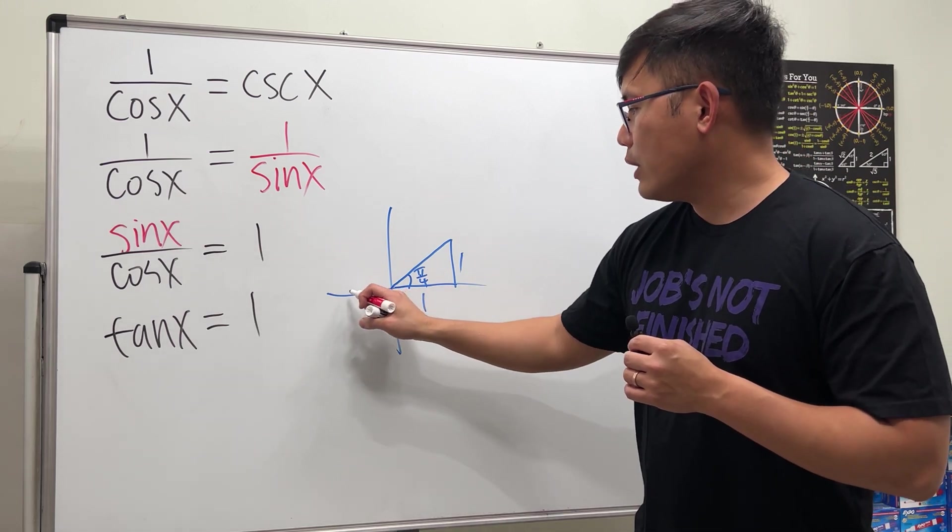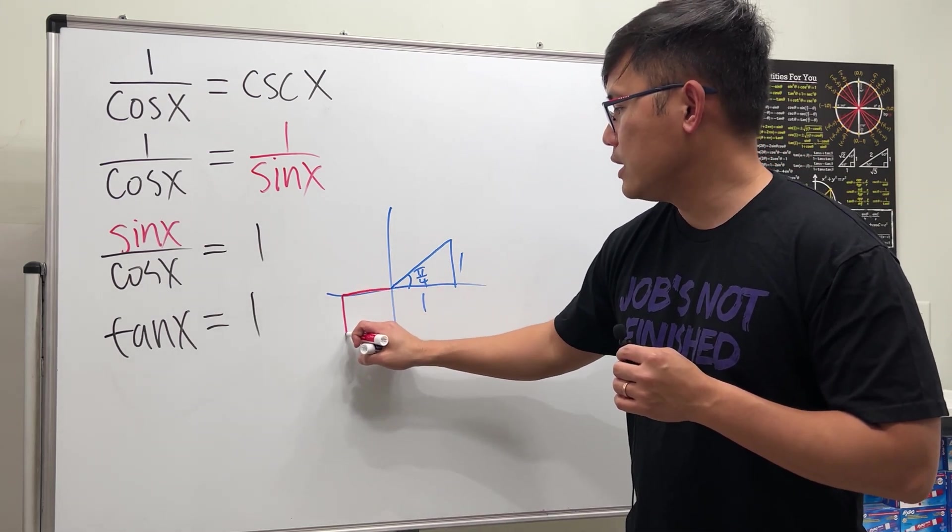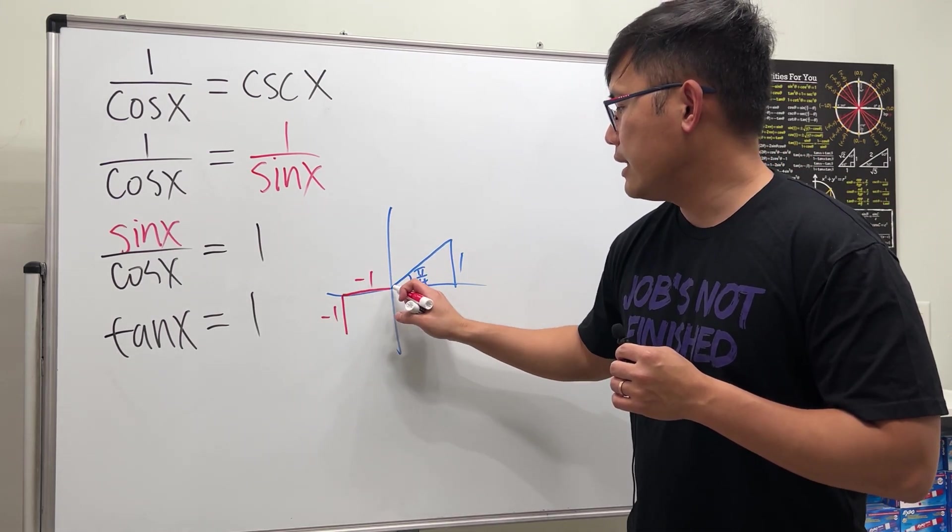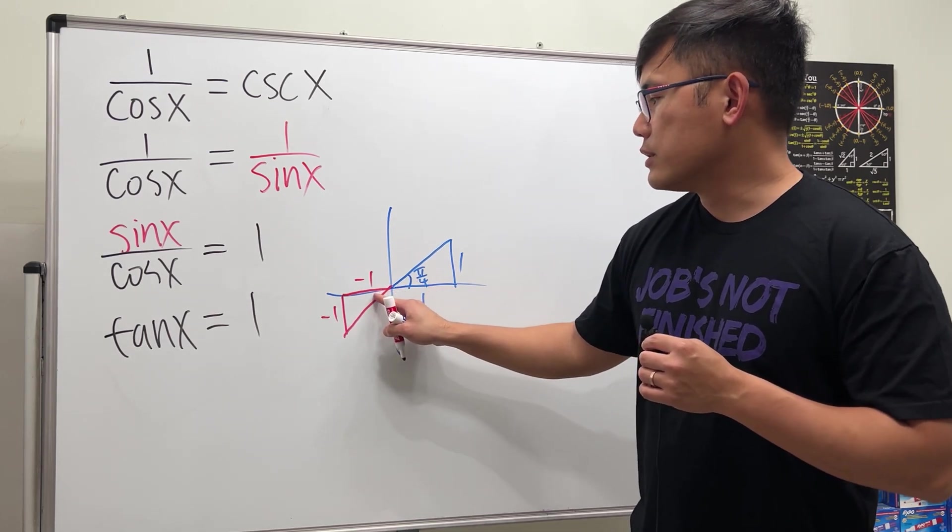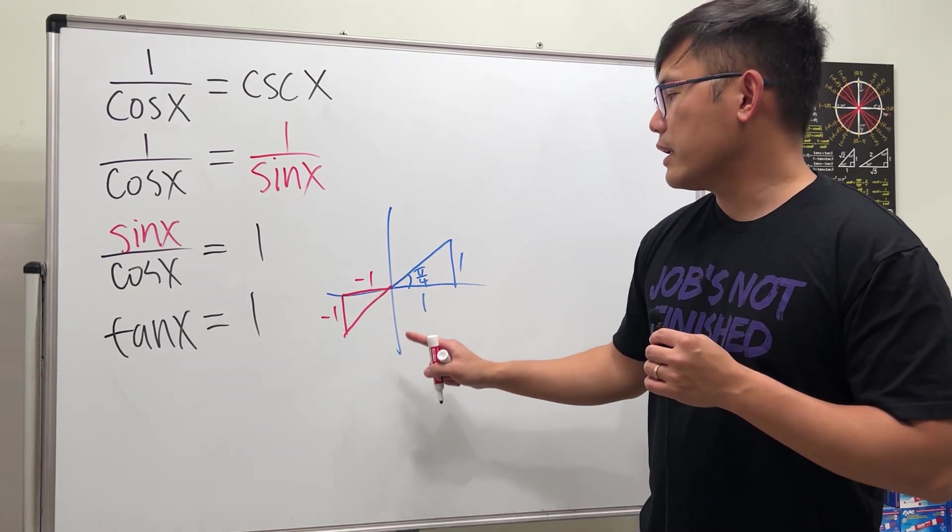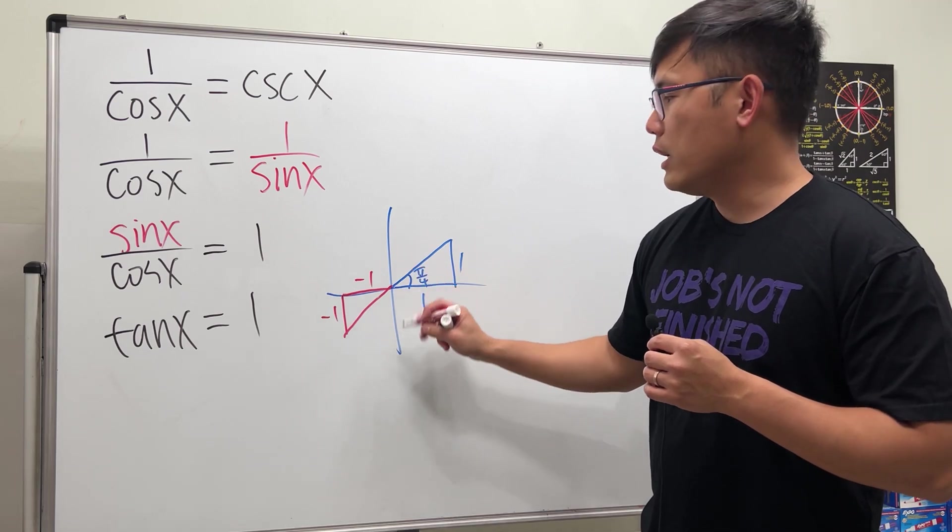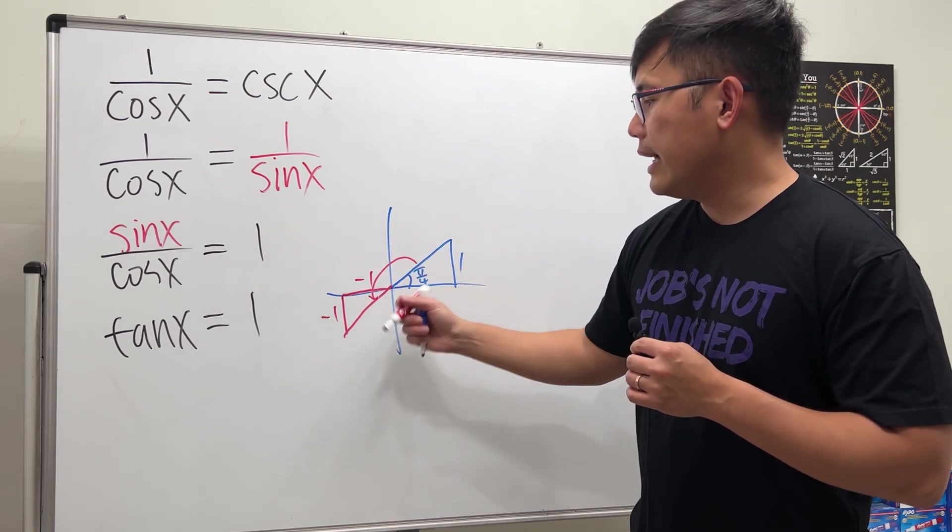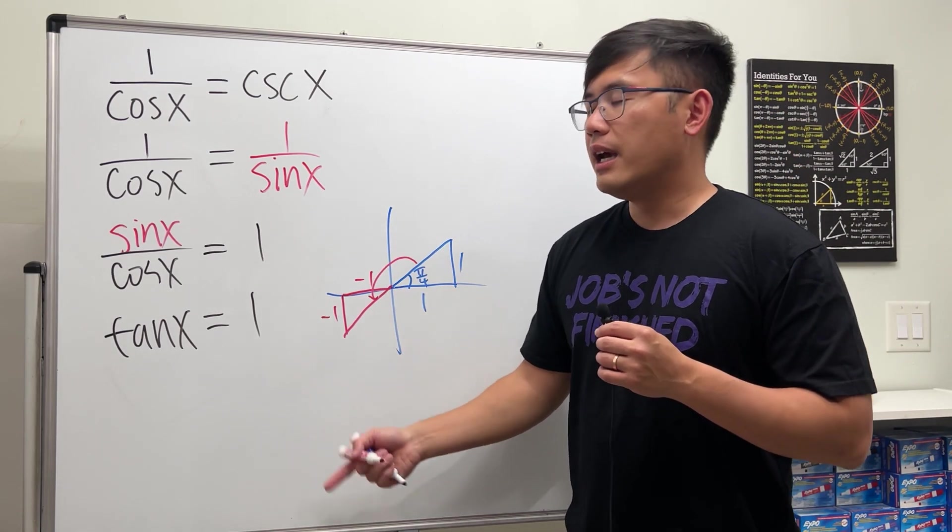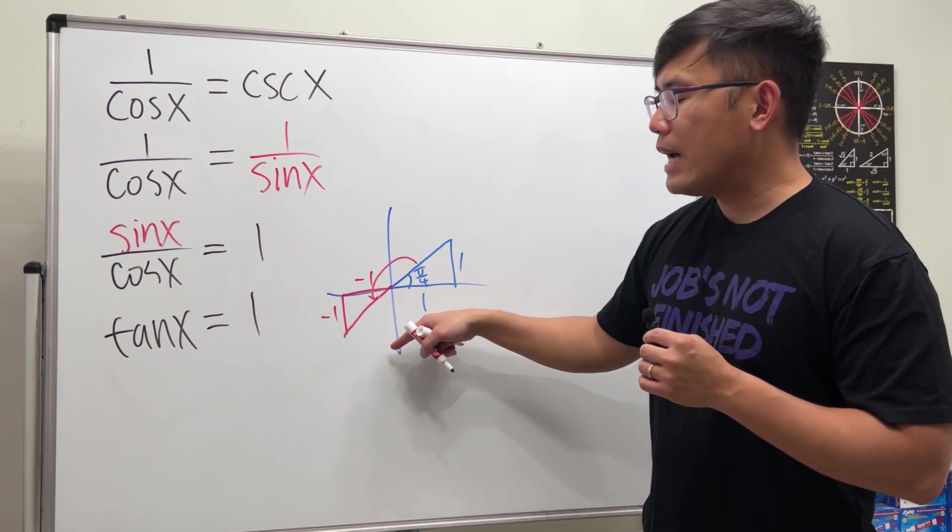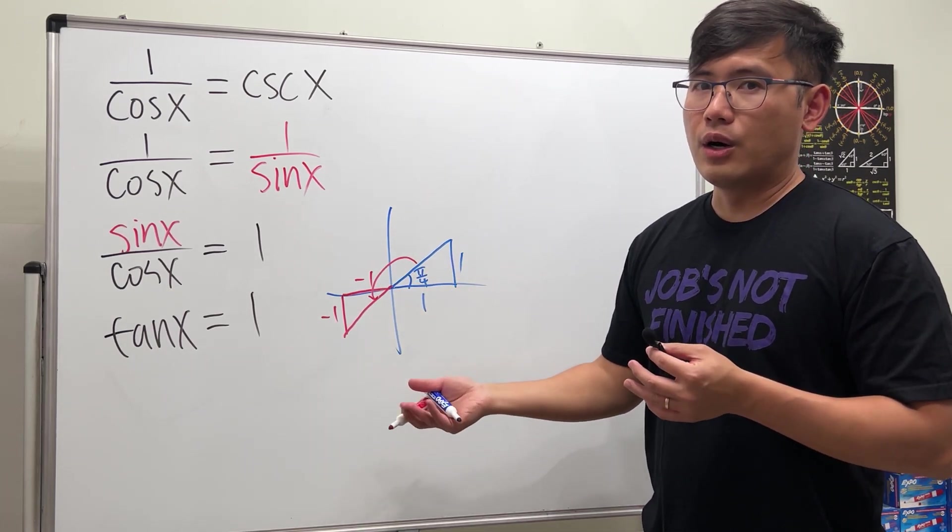But we can also have negative 1, negative 1 like this. And as you can see, this angle is also π/4. But we can actually just go from π/4, and then add π to it, and get to this terminal side. And of course, you can just keep adding or subtracting π, and you can get the whole solution.